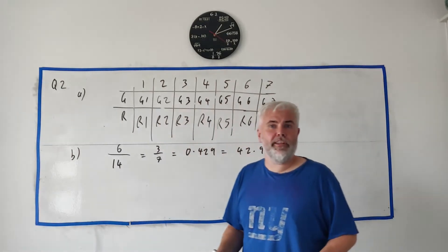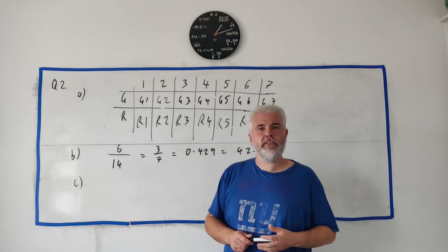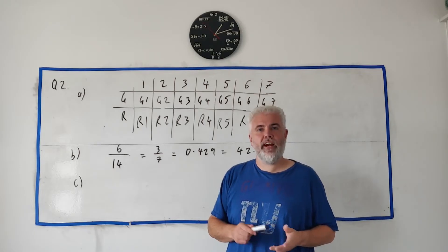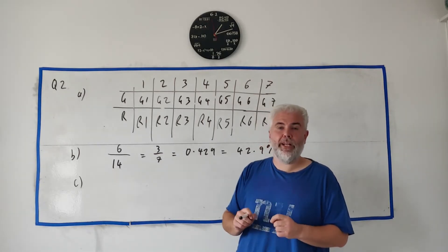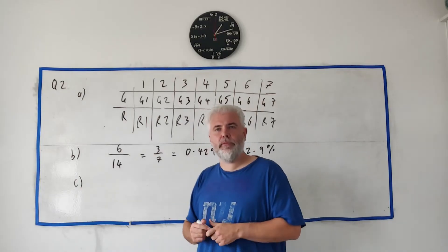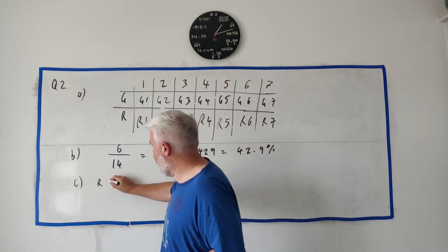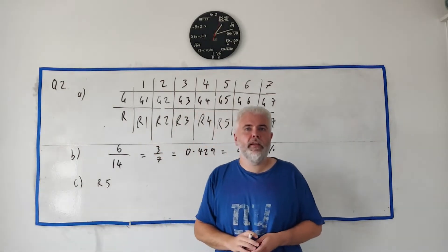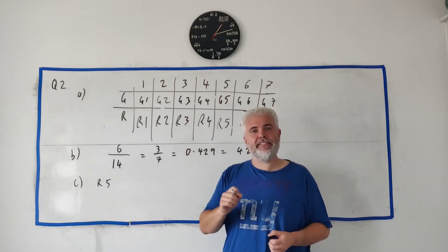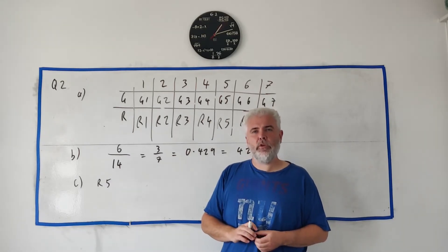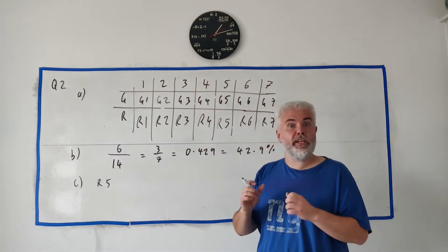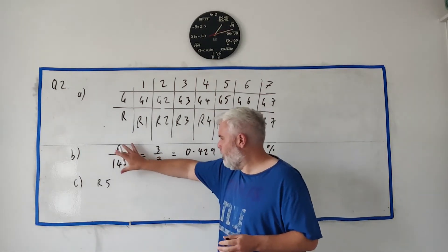Now in part C, they tell us that Sean picks a card at random but doesn't replace it. The card he picks is R5, red five, and he then picks a second card. They ask: what's the probability of the second card being green?